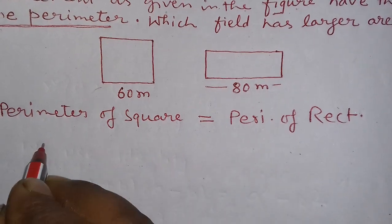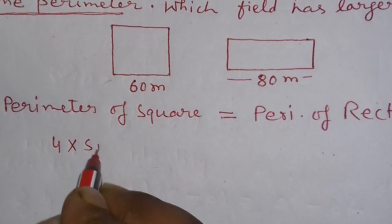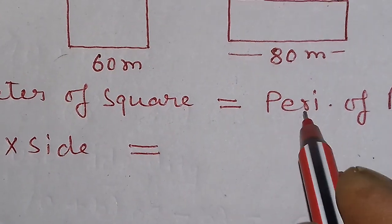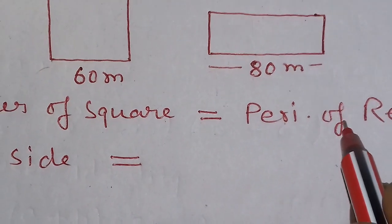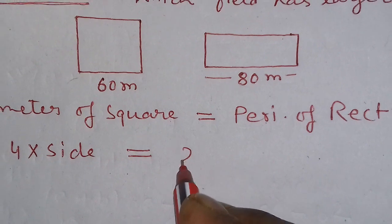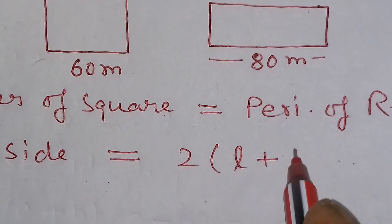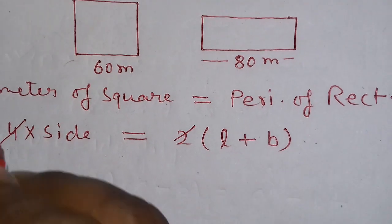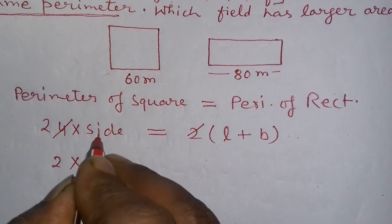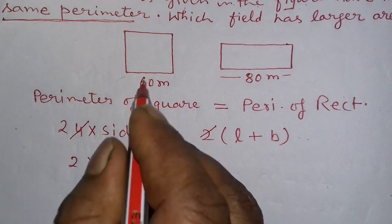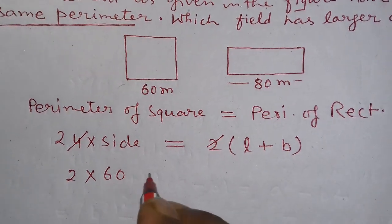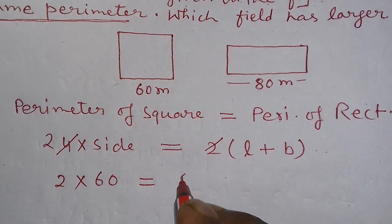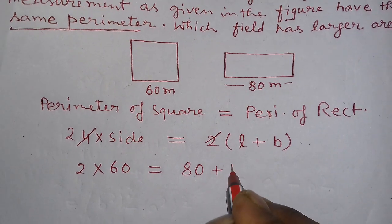Now what is the formula of perimeter of square? 4 into side. At the place of equal you write here equal and what is the formula of perimeter of rectangle? 2(l + b). 2 reduce by 4 at 2 times here, 2 into what is the value of side of square? 60 equal l, what is the value of l? 80 meter plus b.